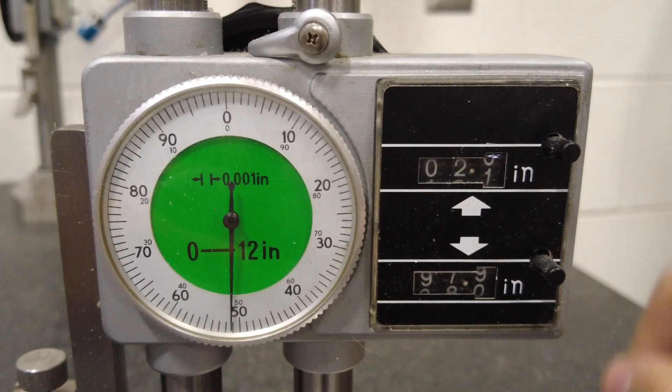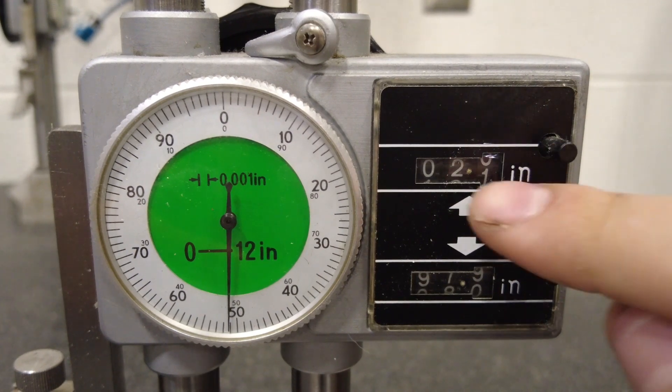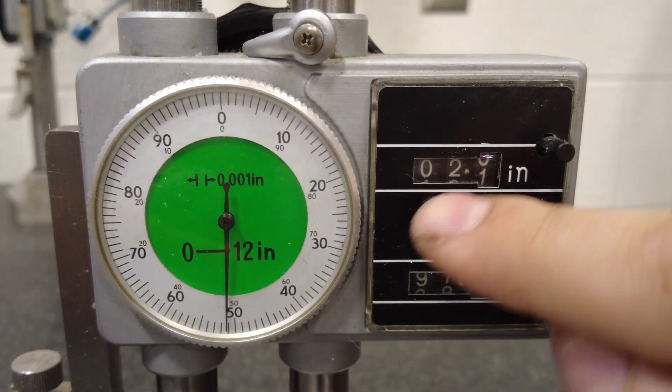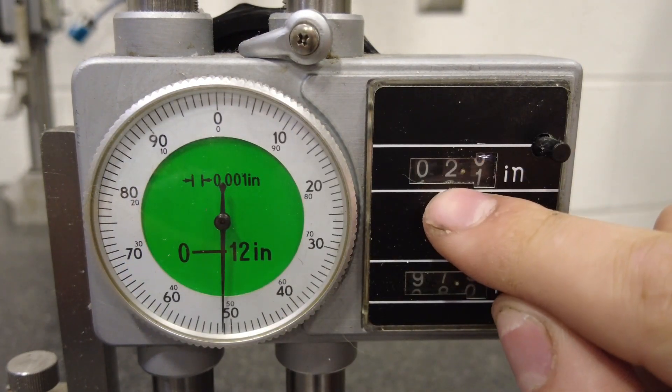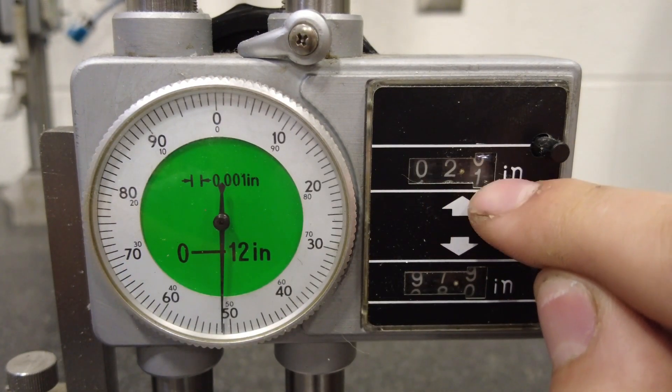Now once we set the height gauge where we want, we can take our reading. This top counter on the side here measures how many times this needle goes around. You can look, it went around 2 point, and this is actually going to be 0.